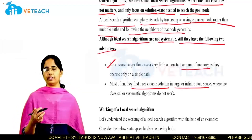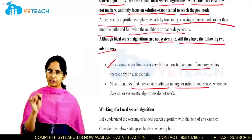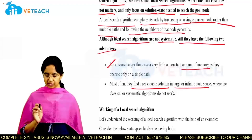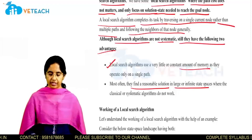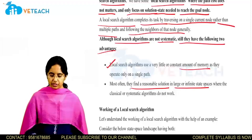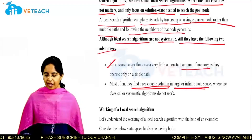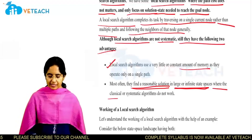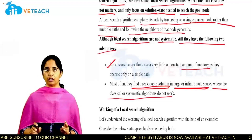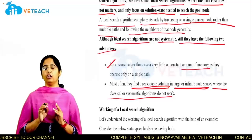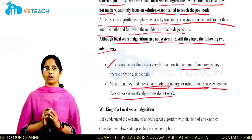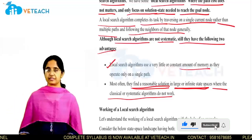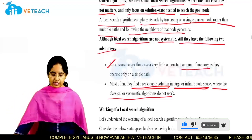If a coin is thrown in the lawn of a park, local search and optimization algorithms work better to find it. They find a reasonable solution in large or infinite state spaces where classical or systematic algorithms will not work at all. That is the key advantage of local search algorithms.